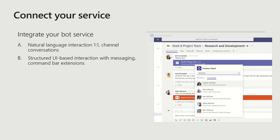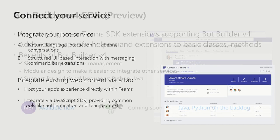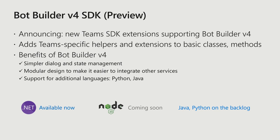This messaging extension is also available from the command box at the top of the screen. We already saw how you can bring in your existing web content as well via a tab. If you have a more sophisticated web application, it's quite easy to bring that into Teams and integrate it via the JavaScript SDK. Regarding Bot Builder v4 support, we currently have the v4 SDK supported for .NET in preview. There are Microsoft Teams-specific SDK extensions provided as a NuGet package in .NET, allowing you to take advantage of Teams-specific concepts and APIs alongside the core bot logic. Node.js support is coming soon, and Java and Python are on the backlog.